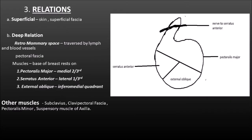Let us now move on to the relations of the mammary gland. Superficial relations include the skin and the superficial fascia. Deep relations include the retromammary space which is traversed by lymph and blood vessels. The breast prostheses are basically inserted in this place. Next is the pectoral fascia. There are totally three muscles on which the base of the gland rests: pectoralis major in the medial two-thirds, serratus anterior in the lateral one-third, and external oblique in the inferomedial quadrant. Other deep structures include the subclavius, clavipectoral fascia, pectoralis minor and the suspensory ligament of the axilla.